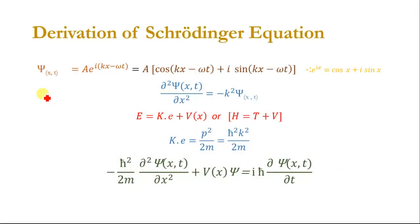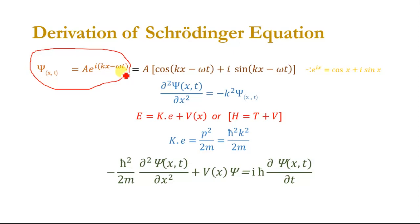We will begin our calculation with the wave function. The wave function can be written as psi(x,t) is equal to A times e to the power iota(kx minus omega t). This psi is dependent on time and position of the particle, and this wave function is defined as the probability of finding a particle in a certain space.